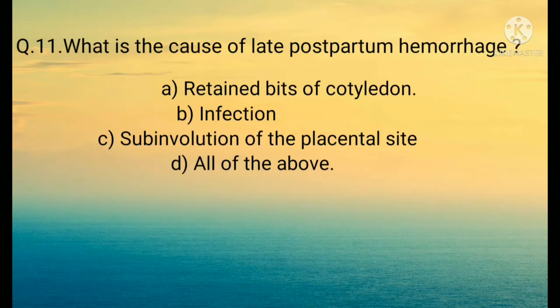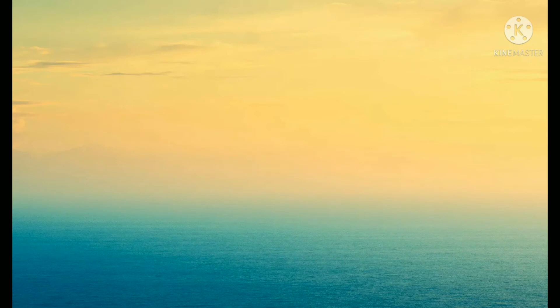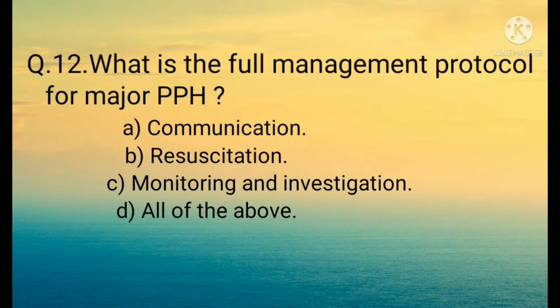Question number eleven: What is the cause of late postpartum hemorrhage? Options are: A) Retained bits of cotyledon, B) Infection, C) Sub-involution of the placental site, D) All of the above. The correct option is D) All of the above.